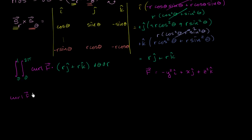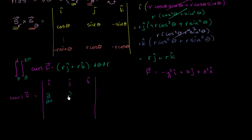The curl of f is going to be equal to the determinant. We have our i, j, k components. It's the del operator crossed with the actual vector. So the del operator is the partial with respect to x, partial with respect to y, partial with respect to z. And our vector field — negative y squared is our i component, x is our j component, and z squared is our k component.